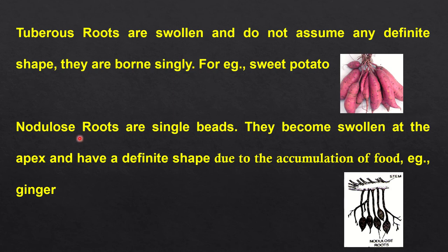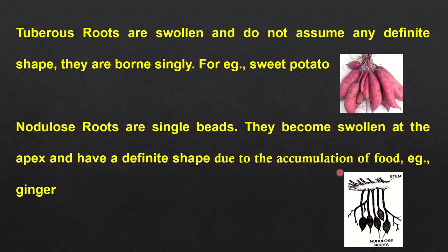Moving to nodulose roots. They have a very beautiful appearance because they have got a definite shape. They become swollen at the apex and have a definite shape due to accumulation of food. This is found in ginger. Please look into the corresponding diagrams and pictures as well — this will help you to remember things better.